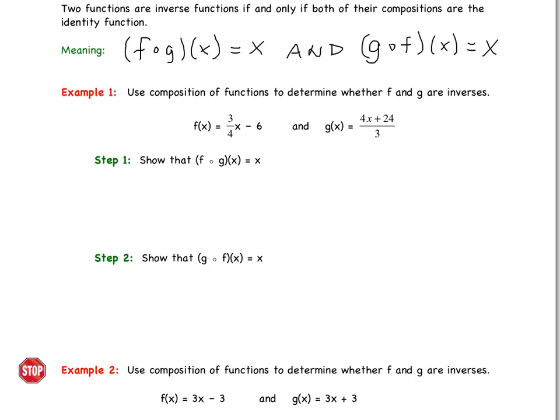We're using composition of functions, and remember this is saying that we want to take function g, 4x plus 24 over 3, and plug it in to function f. So what's this going to look like? Let's go ahead and begin. We're going to have f of g of x equals 3 fourths times this quantity 4x plus 24 all over 3, and then don't forget about this minus 6 at the end for function f. So when we carry things out, the nice thing is these 3's cancel.